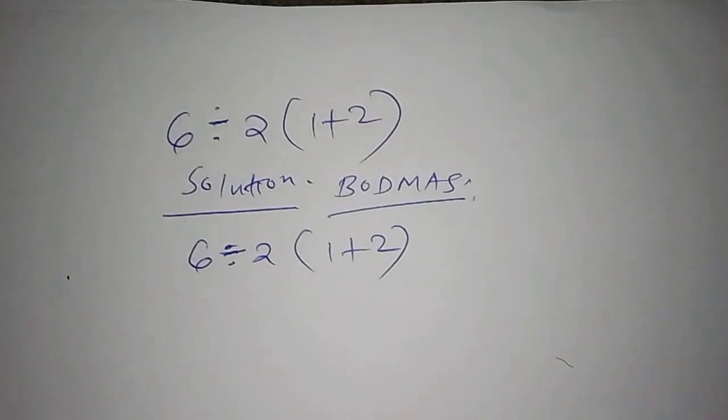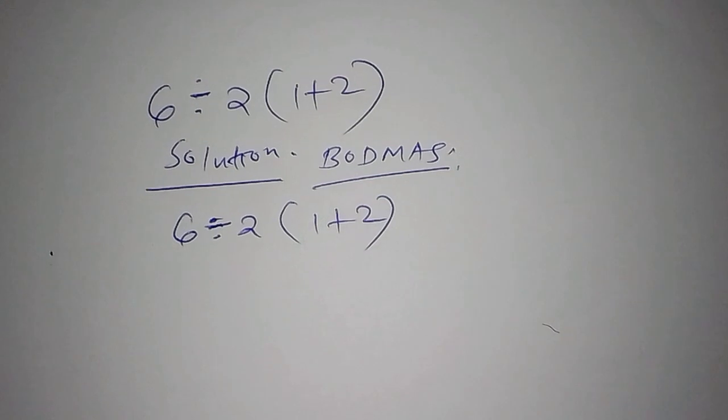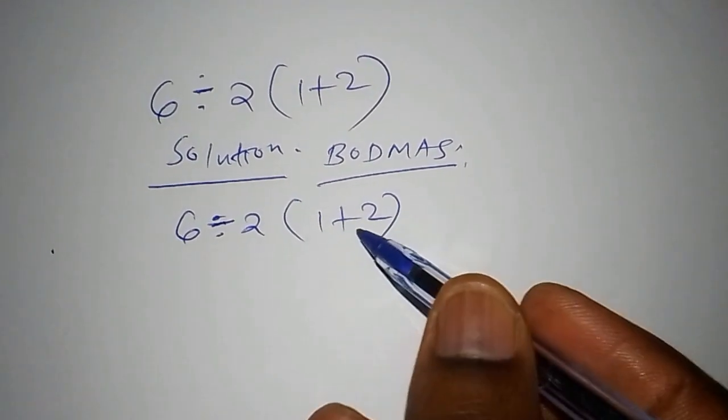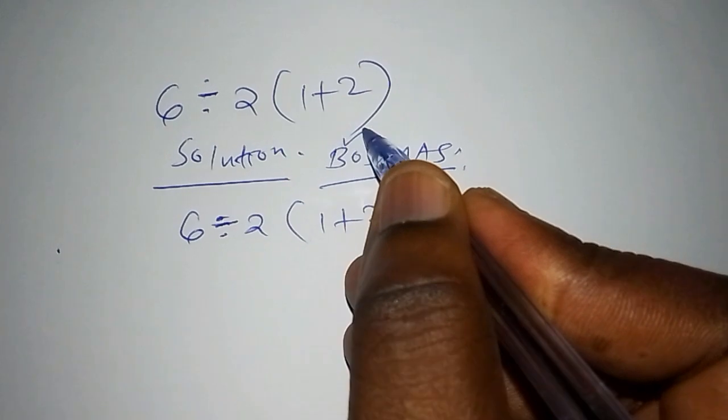So as usual, once we have that mathematical sum, we are going to work out the number inside the bracket first because of B. B stands for the bracket.